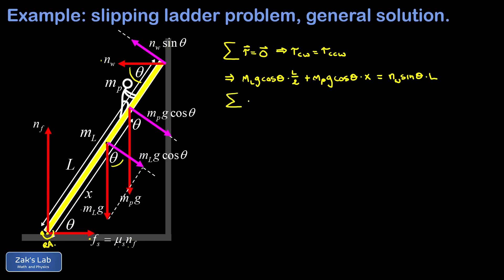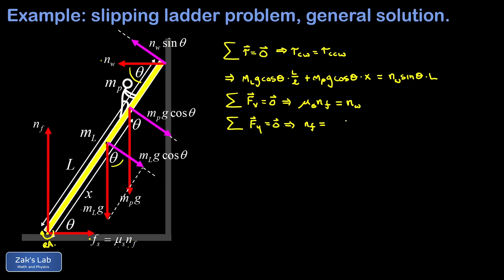For the x-direction force balance, the only rightward force is static friction mu_s times N_F, and the only leftward force is N_W, so mu_s N_F equals N_W. For the y-direction, the only upward force is N_F, balanced by the two downward weights. Factoring, N_F equals (m_L plus m_P) times g, the total weight of ladder plus person.